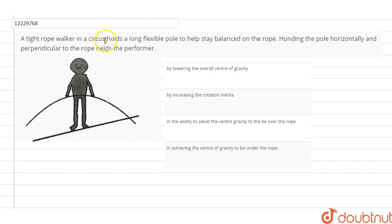So, there is a tightrope walker in the circus. This is a long, flexible pole. Okay? This is balanced, holding the pole horizontally and perpendicular to the rope, helps the performer. So, why is the reason why it is balanced?